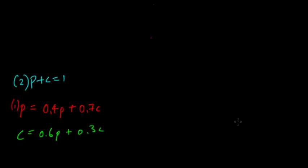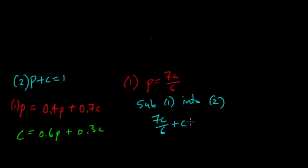So we derive 1 and we already had that, we said that p equals 7c over 6. Then we sub that in and we got an answer. But now we want to sub that into 2. So when we sub that into 2 we get 7c over 6 plus c equals 1. We get 13c over 6 equals 1. Therefore c is equal to 6 over 13. Sub that back in and we get p equals 7 over 13.